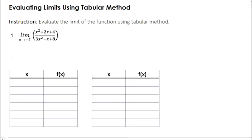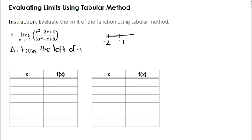Let's start with our first table. We're going to assign values from the left of negative 1. In the x-axis, we know that the nearest integer from the left of negative 1 is negative 2. So in our first table, we're going to assign values of x from negative 2 approaching negative 1, moving closer and closer. The possible values of x should be x greater than or equal to negative 2 but less than negative 1.